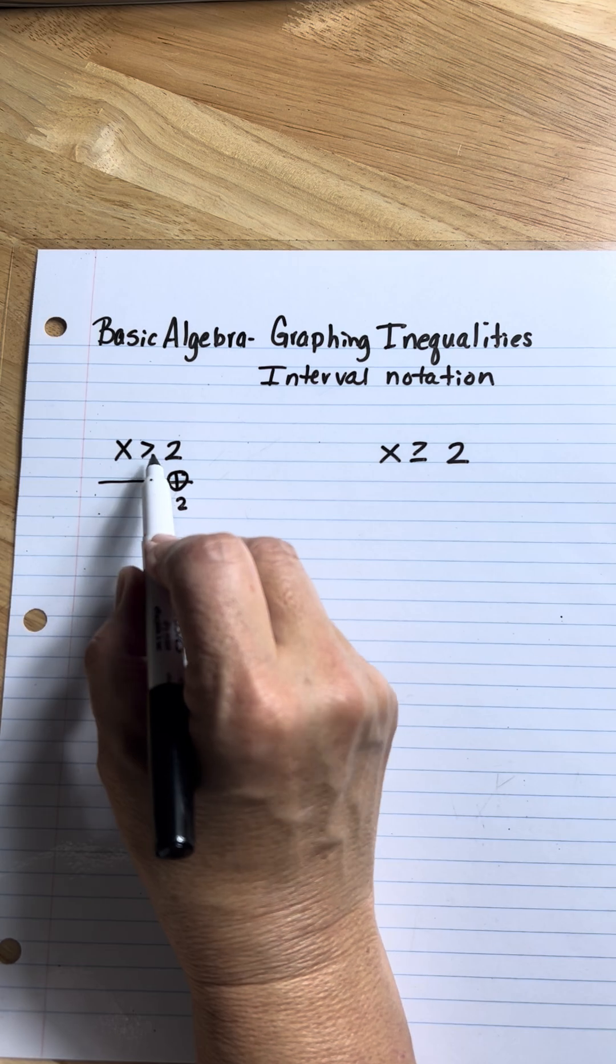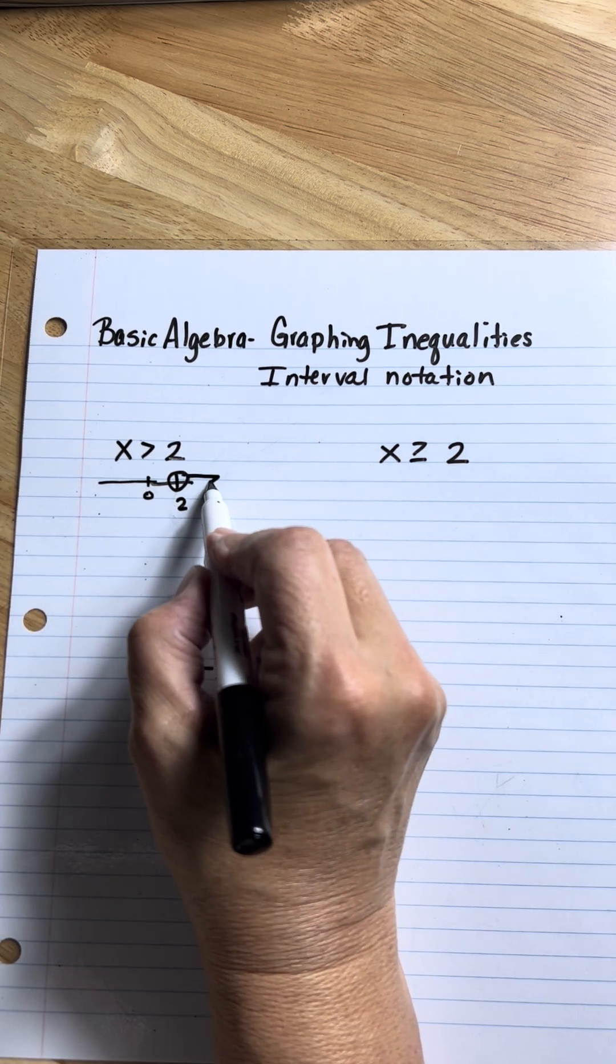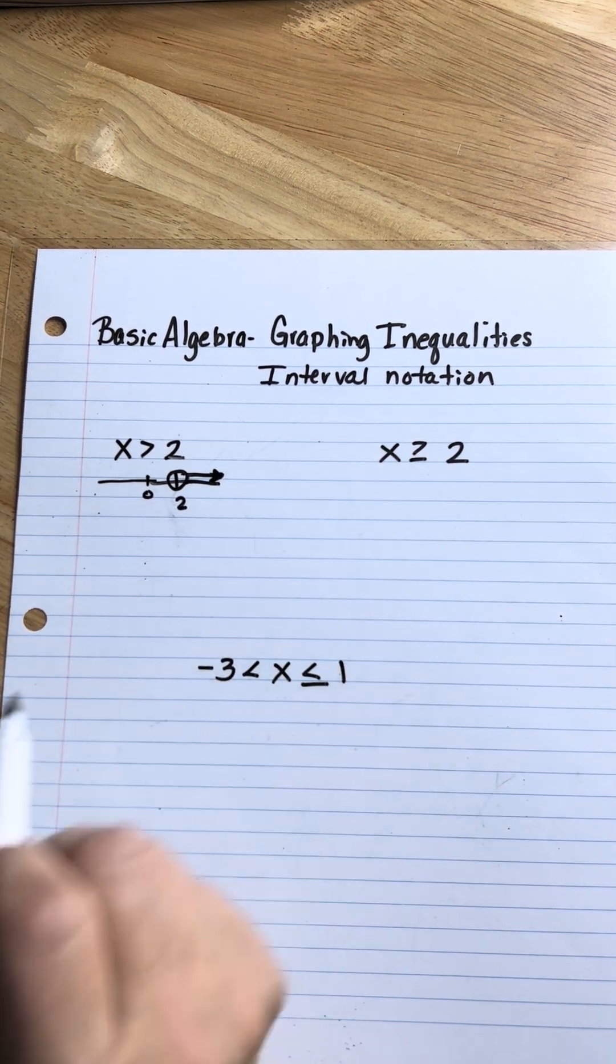Now, what direction are the numbers that are greater than two? Because that's the x I'm describing. Well, they go to the right. So that's the graph of it.